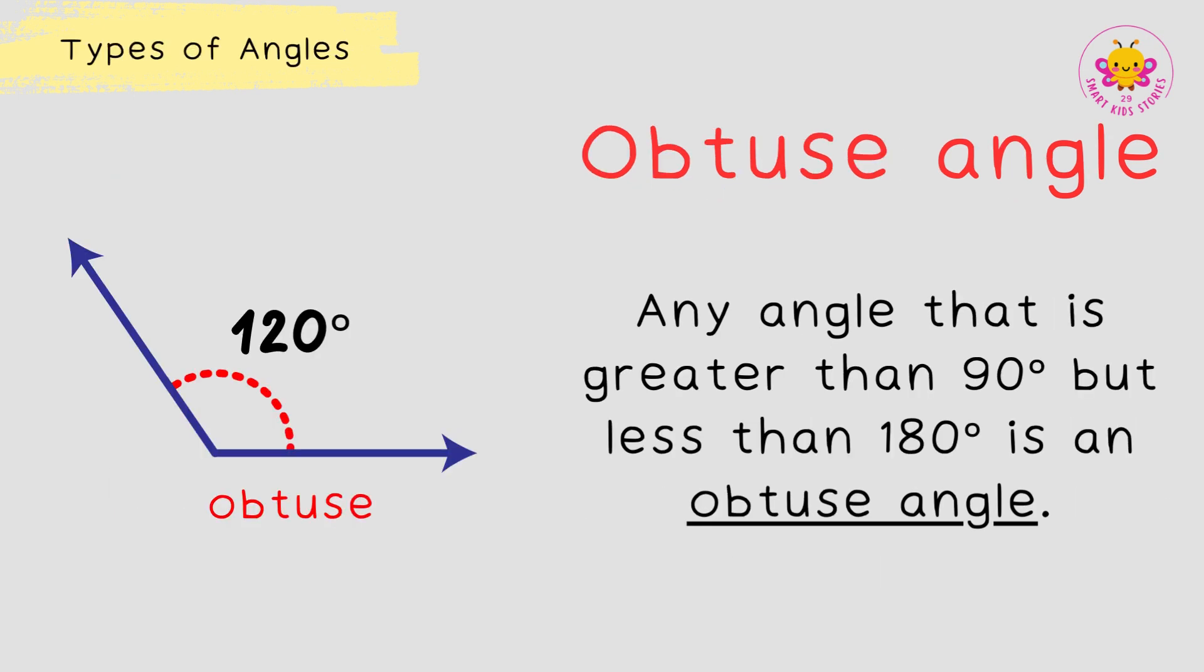Obtuse angle. Any angle that is greater than 90 degrees but less than 180 degrees is an obtuse angle.